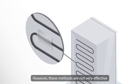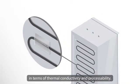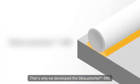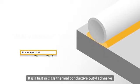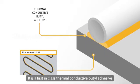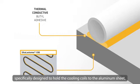However, these methods are not very effective in terms of thermal conductivity and processability. That's why we developed the SikaLastomer 590, a first-in-class thermal conductive butyl adhesive, specifically designed to hold the cooling coils to the aluminum sheet.